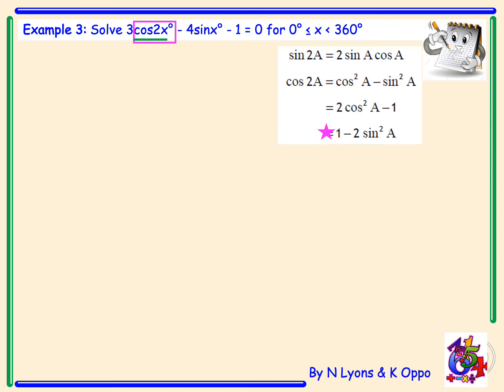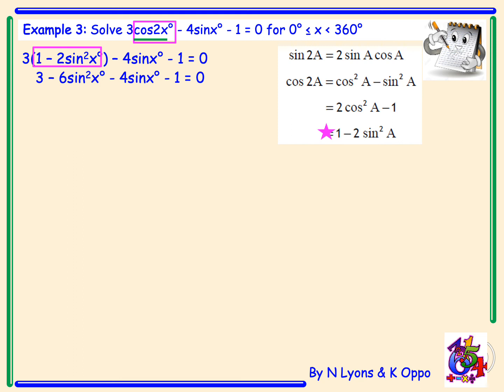When substituting, there is a coefficient of 3 in front, so we write 3(1 - 2sin²x) - 4sinx - 1 = 0. We must multiply everything in the bracket by 3: 3 × 1 = 3 and 3 × (-2sin²x) = -6sin²x, giving -6sin²x - 4sinx - 1 = 0. Combining numerical terms, 3 - 1 = 2, producing a quadratic trig expression.